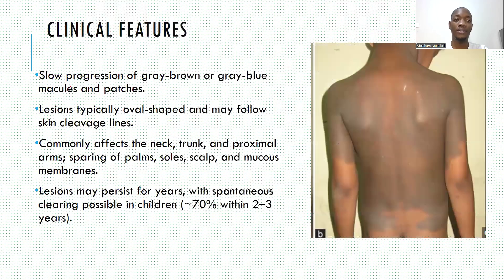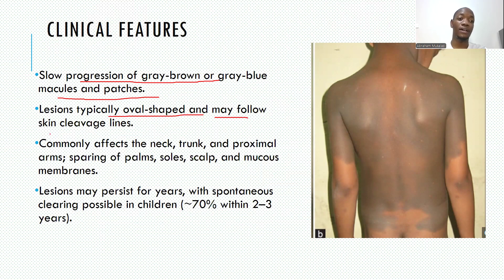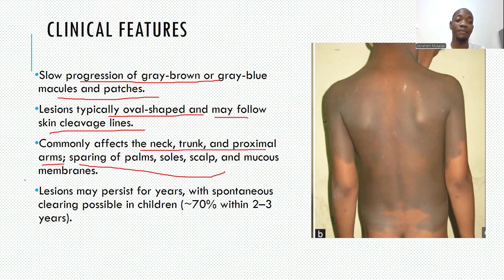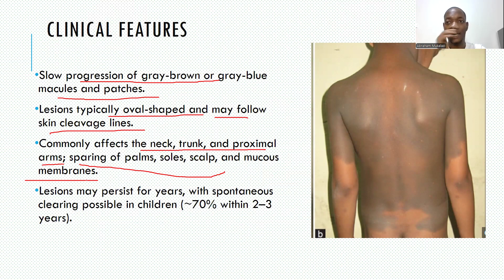In the clinical picture, we see slow-progressive grey-brown or grey-blue macules and patches. Lesions are typically oval in shape and may also follow skin cleavage lines, commonly affecting the neck, trunk, and proximal arms. The condition spares the palms and soles, the scalp, and the mucous membranes — as opposed to fixed drug eruption, which can also involve the mucous membranes.